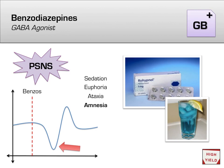One feature of benzodiazepine intoxication that is easily abused is its propensity to cause amnesia. In fact, the date-rape drug known as Rohypnol, or Roofies, which is slipped into drinks to cause the victim to forget the details of the event, is actually a benzodiazepine, albeit one that is not approved for medical use in the United States.